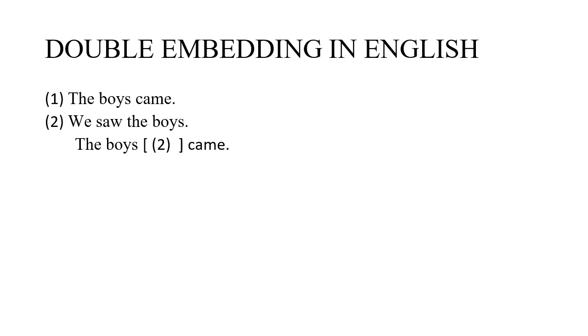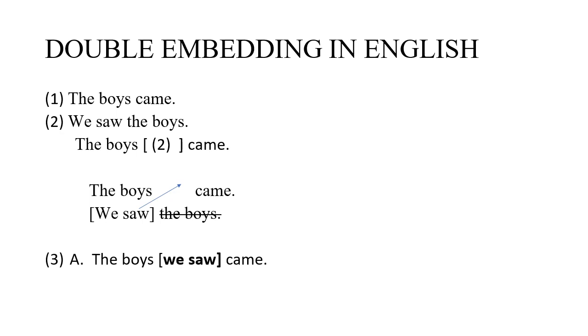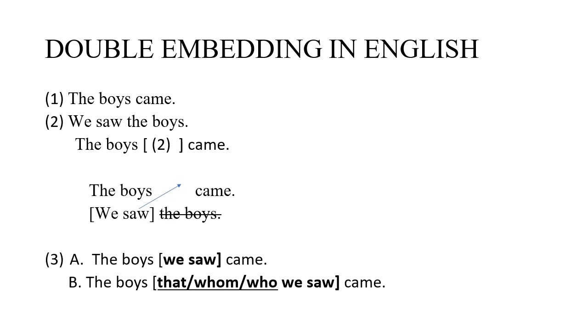Let's look at relative clauses in English. If I give you 'The boys came' and 'We saw the boys,' and ask you to embed sentence two into sentence one, you erase the repeated element and get: 'The boys we saw came.' You could also use a pronoun: 'The boys that we saw came,' 'The boys whom we saw came,' or 'The boys who we saw came' — all are correct answers. The procedure is: take the second sentence, scratch out the repeated part, and insert it into the first sentence.